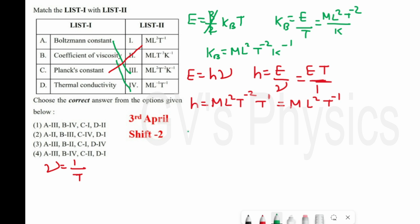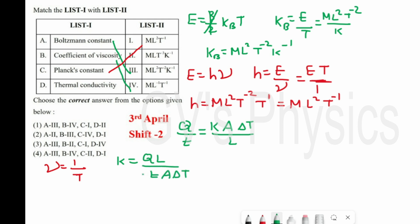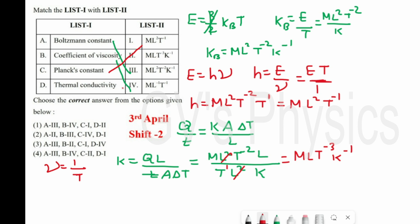Last one is thermal conductivity. Using the formula Q/t = k·A·ΔT/L, we rearrange to k = QL/(t·A·ΔT). Substituting dimensions: Q is energy ML²T⁻², L is length, t is time, A is area L², and ΔT is temperature K. L² and L² cancel, giving MLT⁻³K⁻¹. D matches with 2. Option 1 is the right answer.